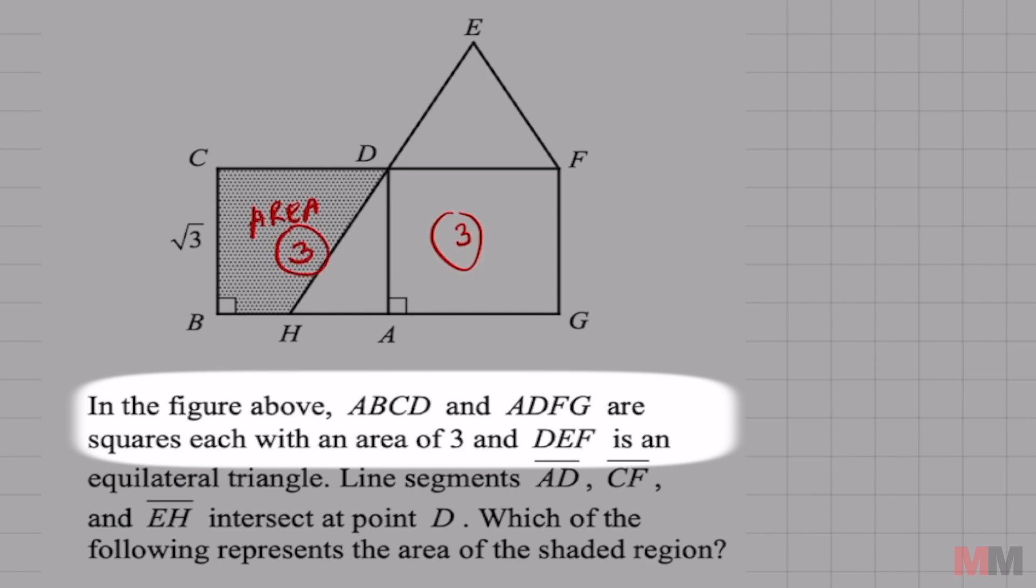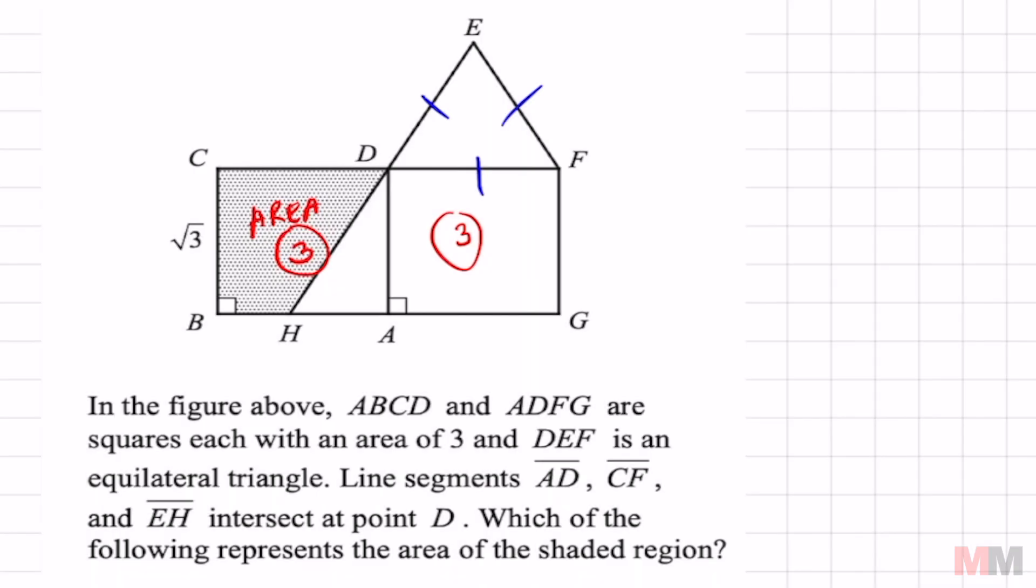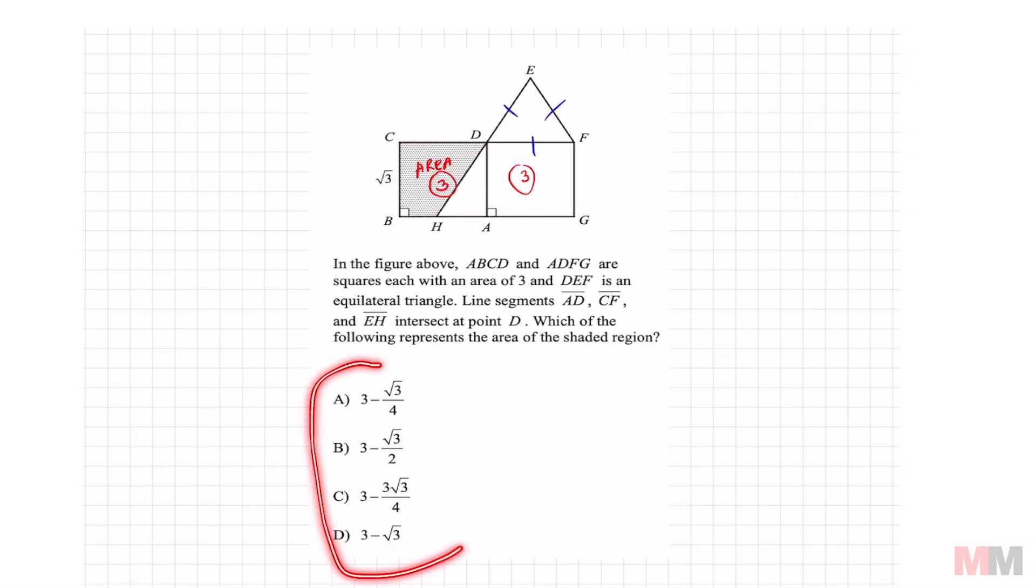The next important information is that we got an equilateral triangle right here. The main question is asking what is the area of this shaded region? And if you look at your answer choices, they are subtracting something from three because the area of this is three.